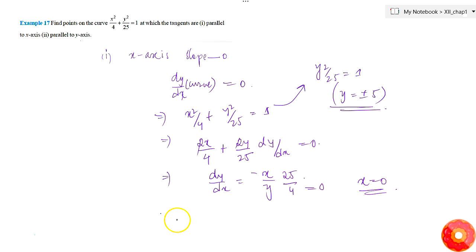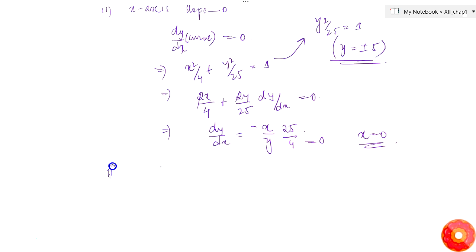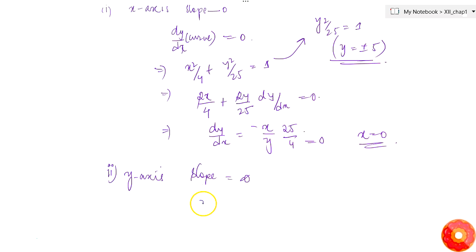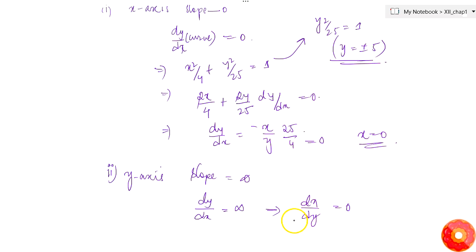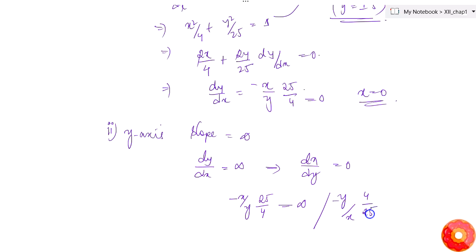Now for the second case, we need to find the tangents which are parallel to the y-axis. Parallel to y-axis means slope is equal to infinity, so dy/dx = infinity, or equivalently dx/dy = 0. We know dy/dx = −(25x)/(4y), so dx/dy = −(4y)/(25x) must equal zero, giving y = 0.